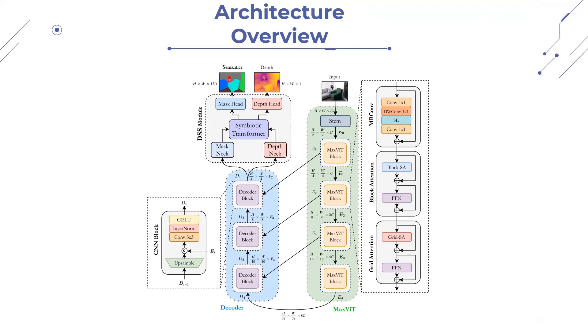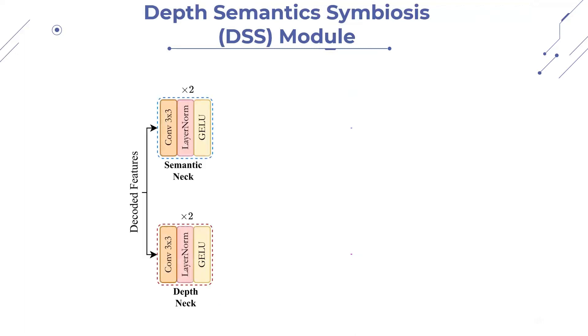Let's dive deeper into how our proposed depth semantic symbiosis module, in short, DSS module works. First, the decoded features undergo individual processing through distinct NAC blocks, generating independent depth and semantic features.